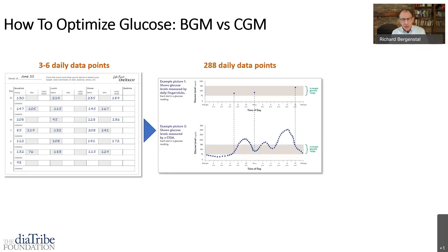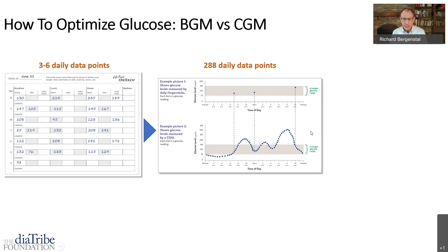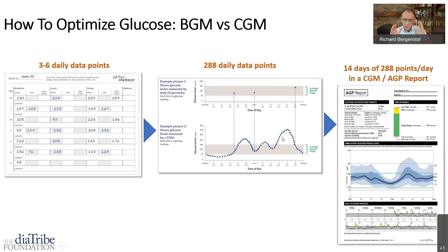Now, all of a sudden, we're in this era of up to 288 blood sugar points in a day — that's every five minutes. If you had three tests in a day, they might look good, but when you look at 288 blood sugars from midnight to midnight, you might be surprised: there were some lows overnight, some highs after supper you never would have seen with just an intermittent finger stick. Now we're going to take those 288 points, put 14 days together — 14 times 288, that's over 4,000 blood sugars. We better figure out a way to organize those blood sugars so it makes sense to you, your loved ones, and your healthcare providers. We call that the Ambulatory Glucose Profile Report, or the AGP report.